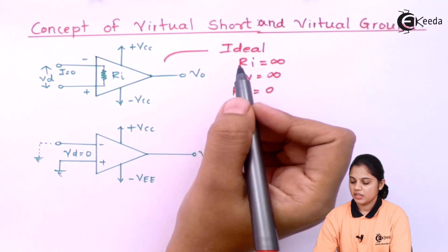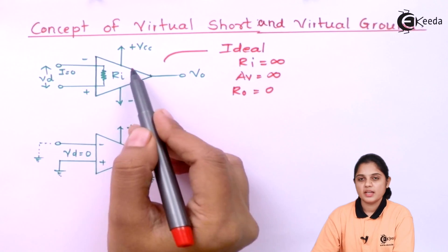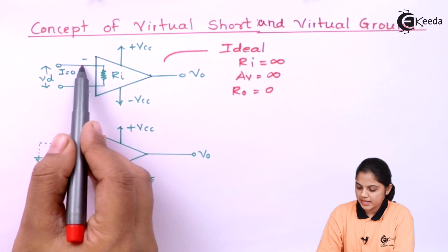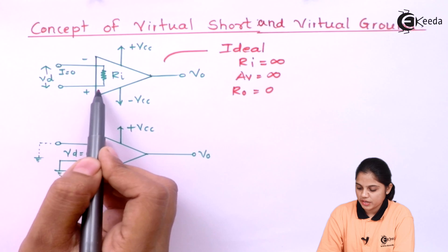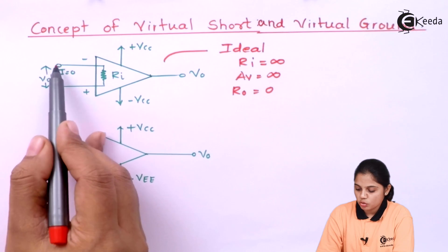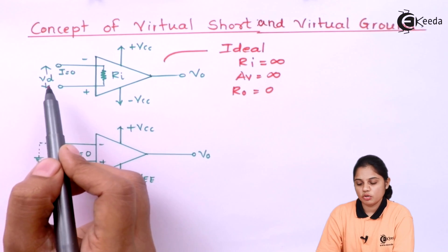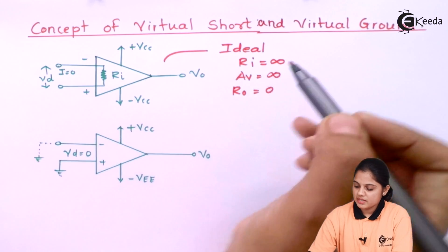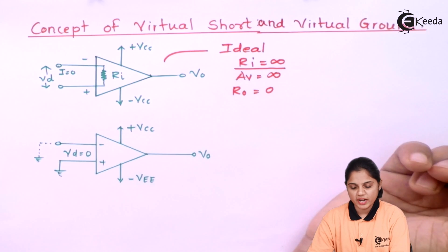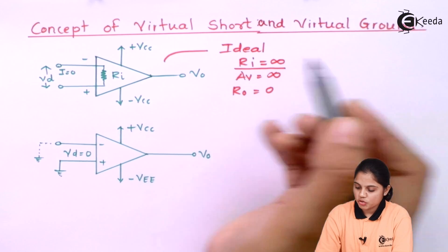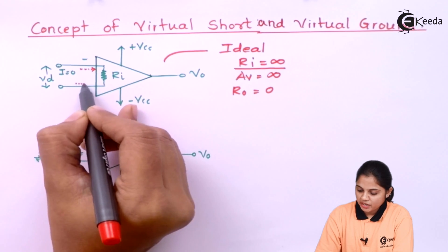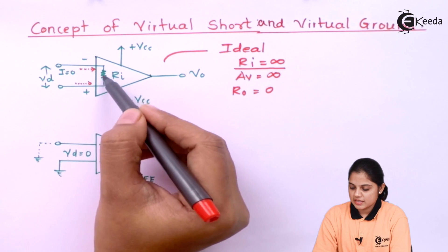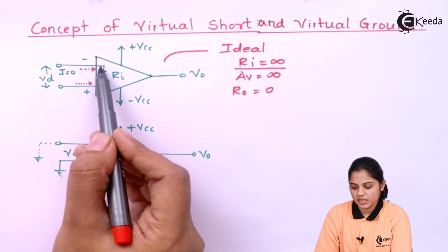Our assumption is the op-amp is ideal. Here you can see both terminals — the negative terminal and positive terminal — which are not connected with each other, and no voltage is given. Even if voltage is given, the differential voltage will be zero. Since the input resistance is infinite, there should be no flow of current through any branch of the op-amp.